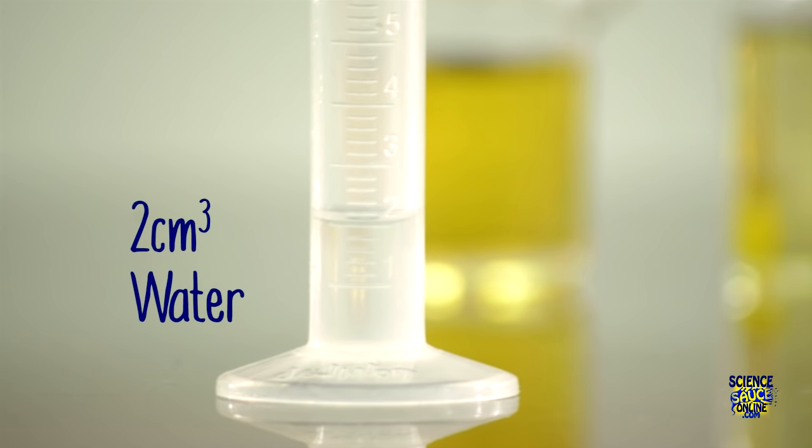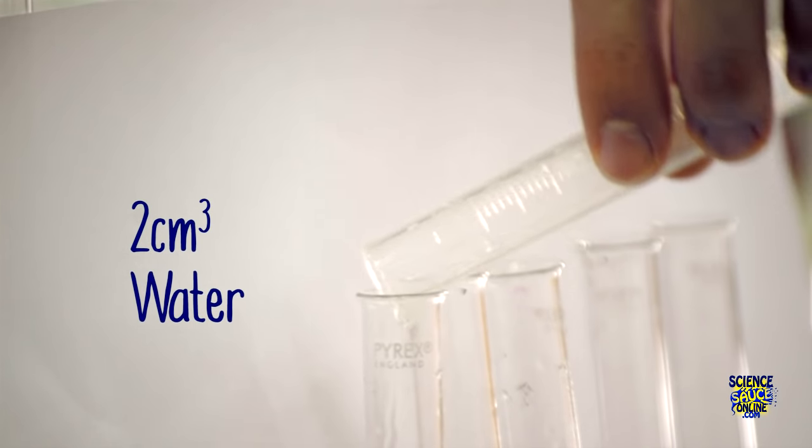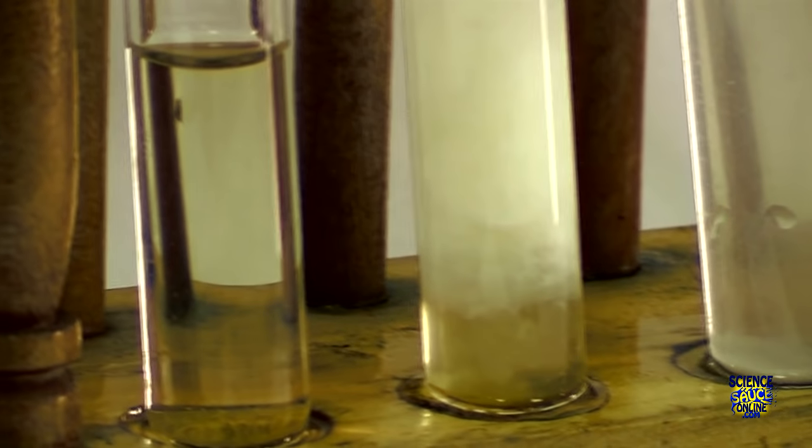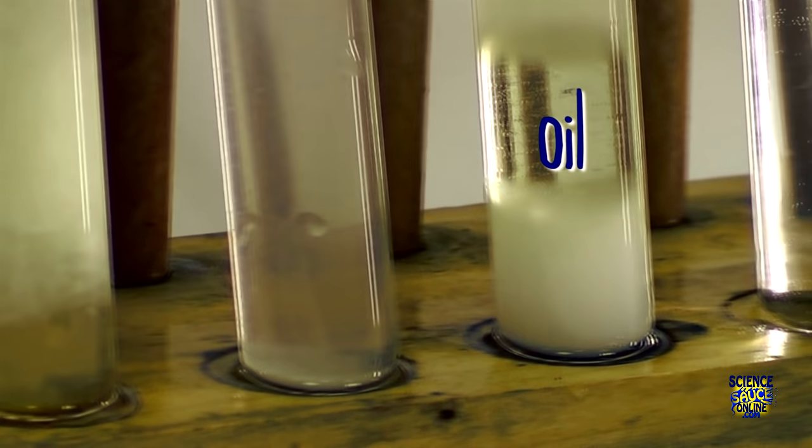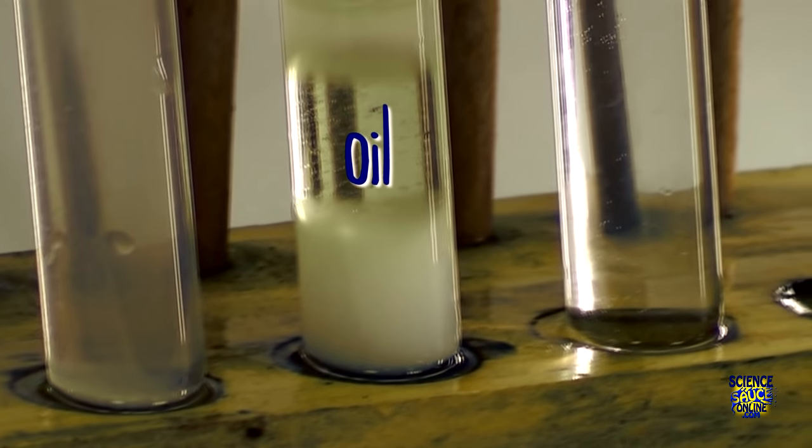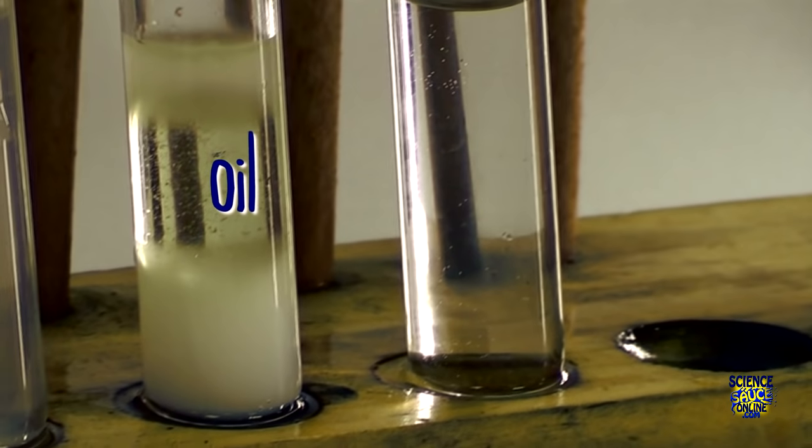After you've shaken your samples add two centimeters cubed of water and then observe the changes. Here in our oil sample you can see this sort of white cloudiness formed. This is what's known as the emulsion.